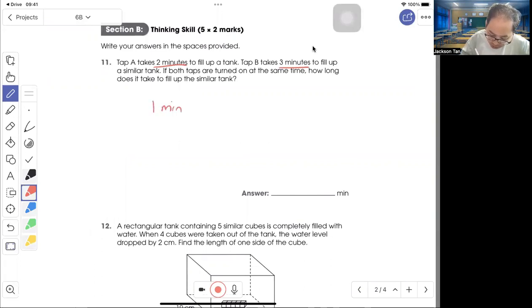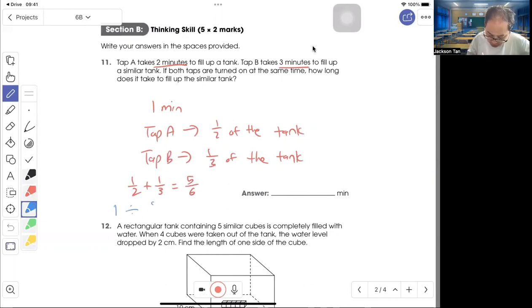So in one minute, Tap A will fill up half of the tank, and Tap B will fill up one third of the tank. So now they say both taps are on, so one half plus one third equals five out of six. Take one whole tank divided by five-sixths. That will take about six over five minutes, which is one and one-fifth minutes. Simple.